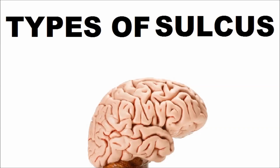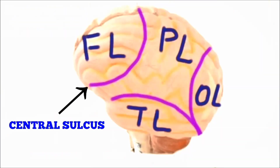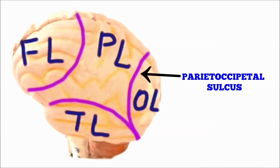The frontal and parietal lobes are divided by the central sulcus. The parietal and occipital lobes are divided by the parieto-occipital sulcus. The parietal and temporal lobes are divided by the lateral sulcus.